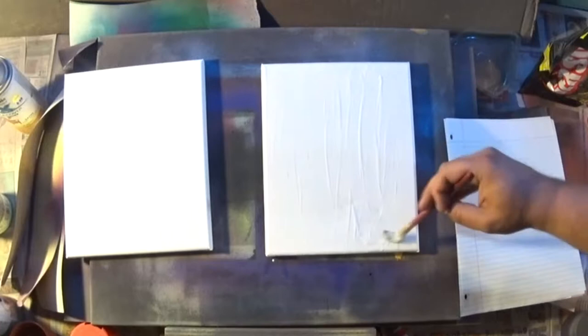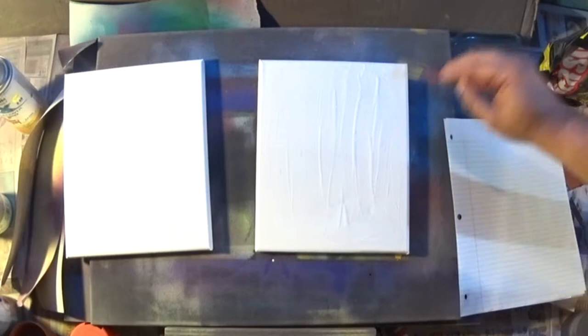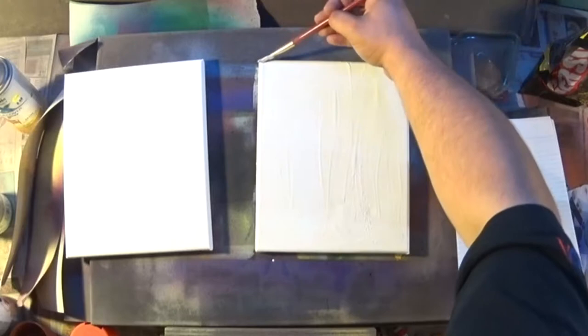So I'm starting out with this Mod Podge. Mod Podge is basically just a thicker Elmer's glue. It works a lot like Elmer's glue. I'm not exactly sure what it's made of, but it looks and feels a lot like Elmer's glue when you're working with it.